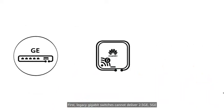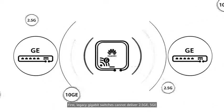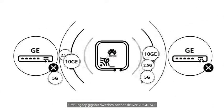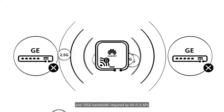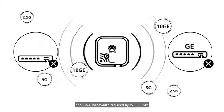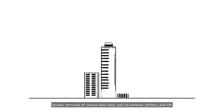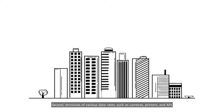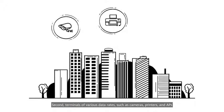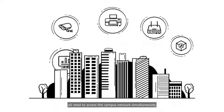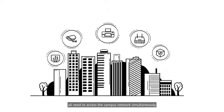First, legacy gigabit switches cannot deliver 2.5GE, 5GE and 10GE bandwidth required by Wi-Fi 6 APs. Second, terminals of various data rates, such as cameras, printers and APs, all need to access the campus network simultaneously.